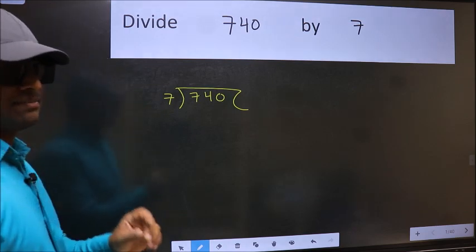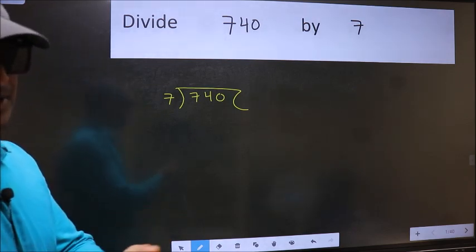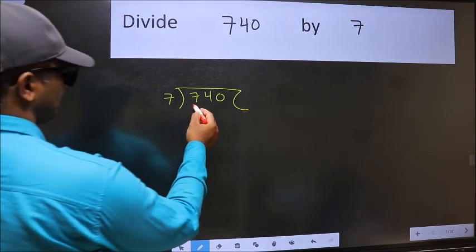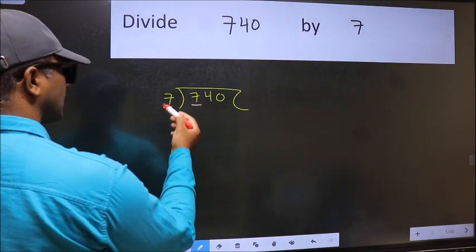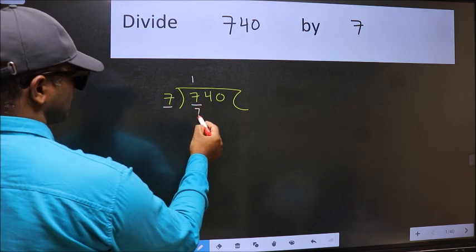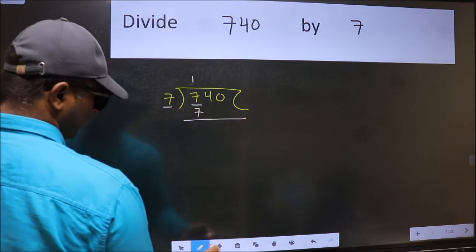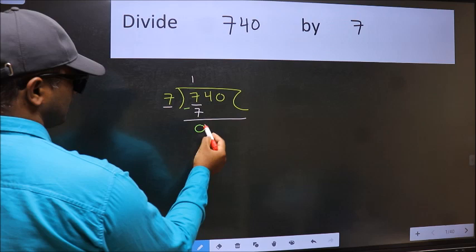This is step 1. Here we have 7 and 7 here. When do we get 7 in the 7 table? 7 once is 7. Now we subtract and get 0.